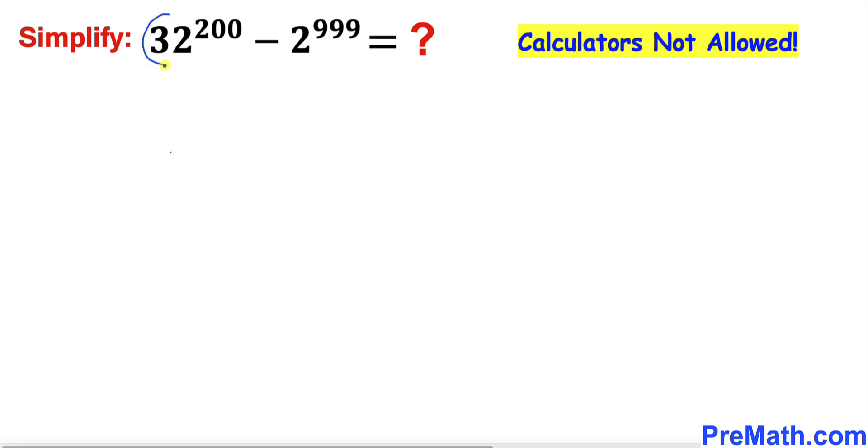Let's focus on this part: 32 to the power 200. Here I have copied it down. Let's focus on this base 32. 32 could be written as 2 to the power 5, therefore we can write this whole thing as 2 to the power 5, and then the whole thing to the power 200.